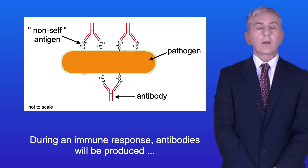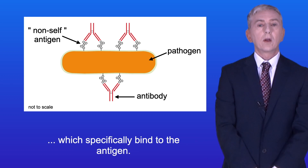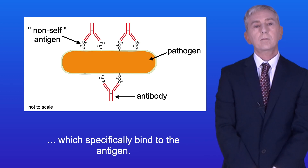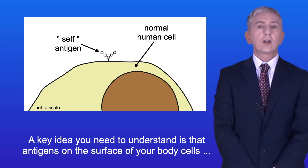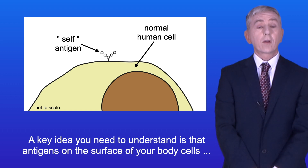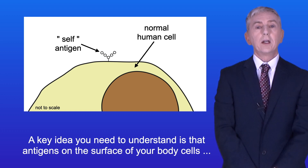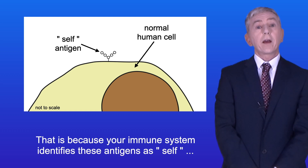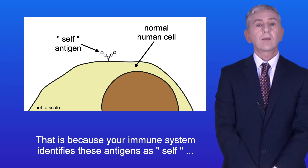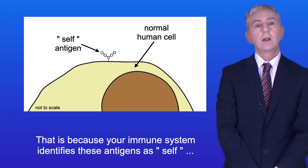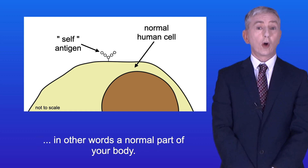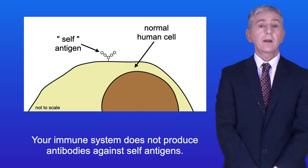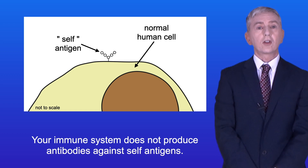During an immune response, antibodies will be produced which specifically bind to the antigen. A key idea to understand is that antigens on the surface of your body cells do not trigger an immune response, because your immune system identifies these antigens as self — in other words, a normal part of your body — and your immune system does not produce antibodies against self-antigens.